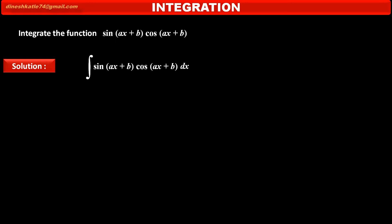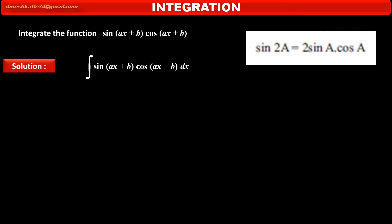So we can apply one formula to make this function simple. We know the trigonometric formula of allied angles, that is, sin(2A) is equal to 2 into sin(A) into cos(A).